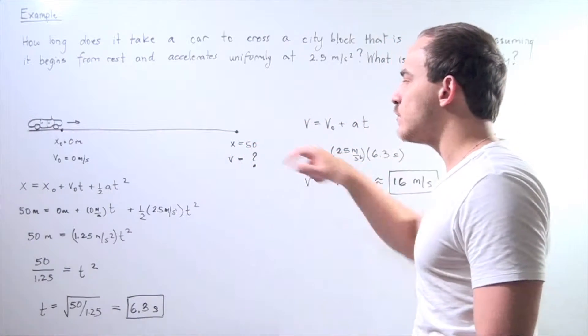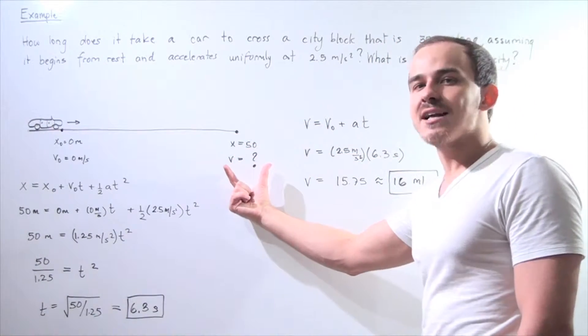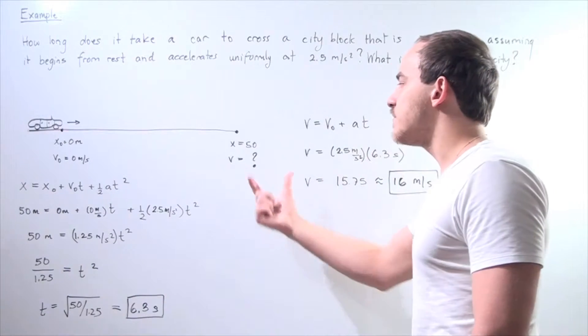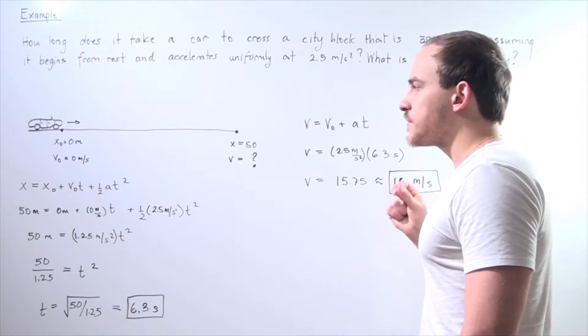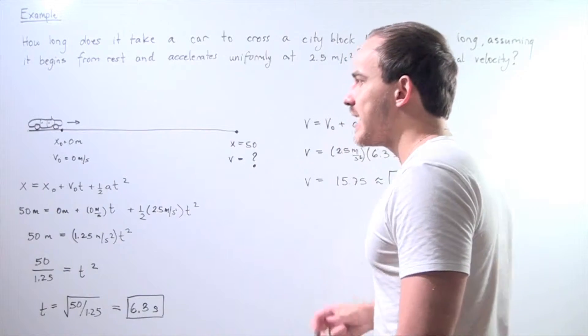so when it reaches x equals 50 meters, what is its velocity? Well, in order to find what the velocity is, we must first find what the time is.